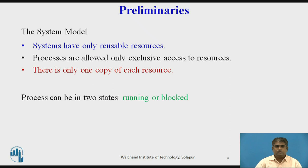A process can be in two states: running or blocked. In the running state, a process has all the needed resources and is either executing or ready for execution. The running state is also called the active state. In the blocked state, a process is waiting to acquire some resources.